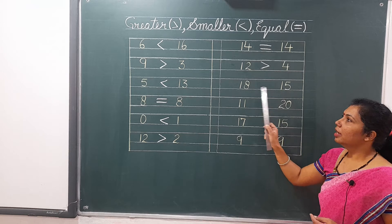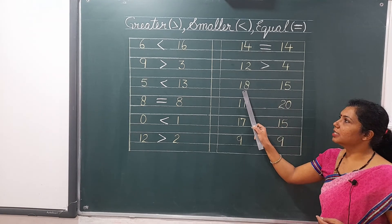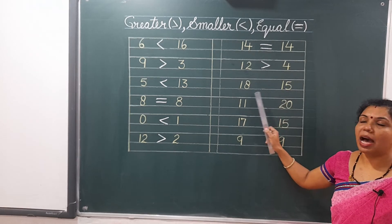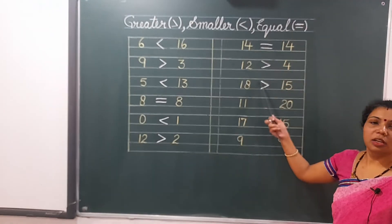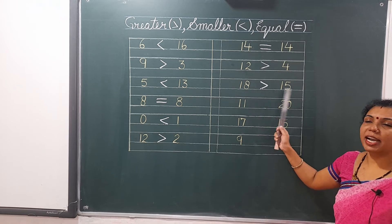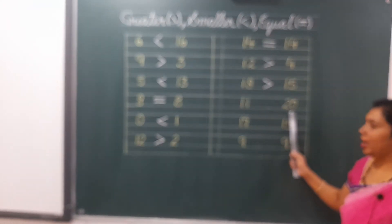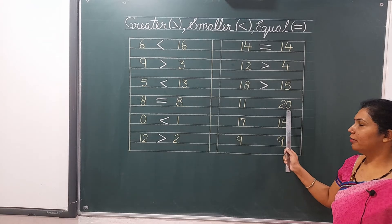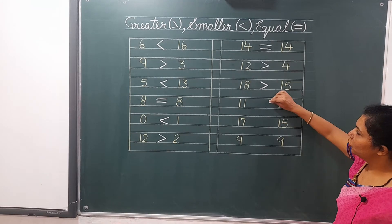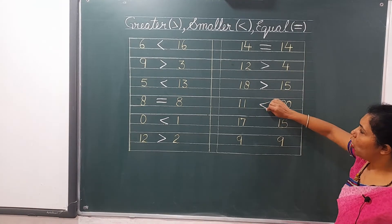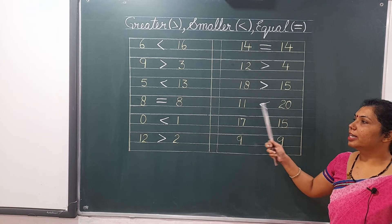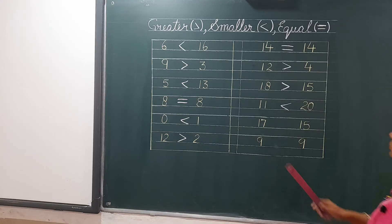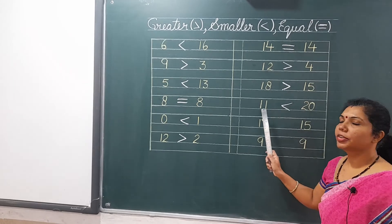Eighteen and fifteen. Eighteen is greater than fifteen because eighteen comes after fifteen. So the greater sign will be used for eighteen, and the mouth will be opened towards eighteen. Then, eleven and twenty: twenty comes after eleven, so twenty will be greater than eleven. We will use the greater sign, and the mouth will be open towards twenty.